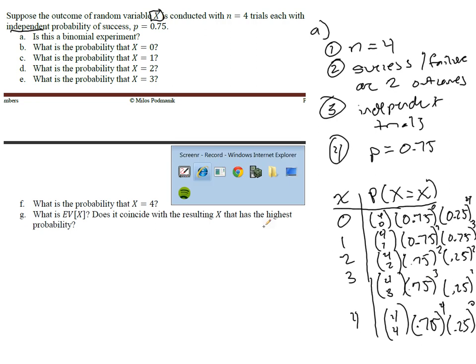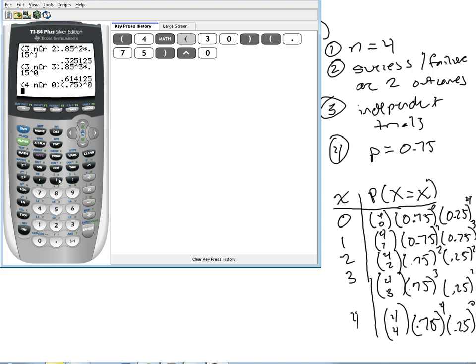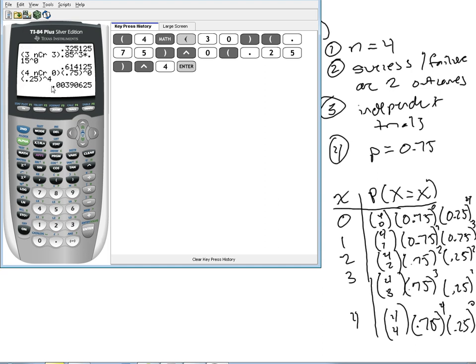So, if we plug this into our calculator, we have to do 4, come over to math, select combinations. For the first one, we do 4 choose 0, and we do 0.75 to the 0 power times 0.25 to the 4th power. And really, anything to the 0 power is 1, but we'll just go ahead and put it in there anyway for completion. So, this is the probability that we get, 0.004.